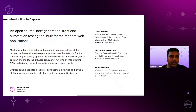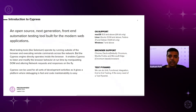Moving on to the next slide. Cypress is an open source, next-generation front-end automation testing tool built for modern web applications. These applications are basically built on top of React.js or AngularJS-based applications. The Cypress engine directly operates inside the browser. This enables Cypress to listen and modify the browser at runtime by manipulating the DOM and altering network requests and responses on the fly.